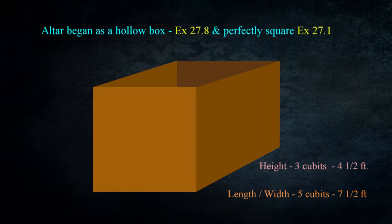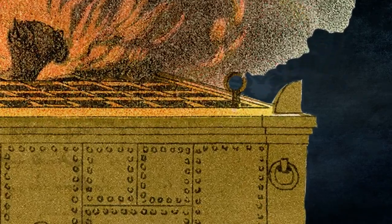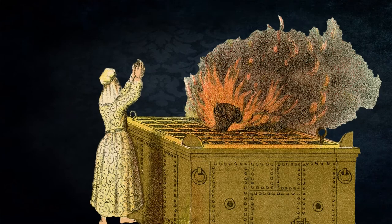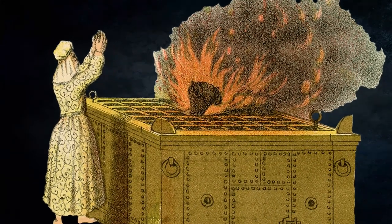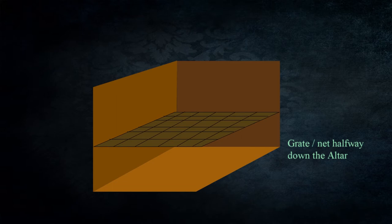The boards were then to be overlaid with bronze — the King James Version renders this as brass, though historically bronze is considered more accurate. At the corners, Moses was to place horns, also overlaid with bronze. Bronze rings were set at the corners to hold staves of acacia wood overlaid with bronze, used for moving the altar. Since the altar would be used for burning the bodies of sacrifices, a grate — referred to as a net in the KJV — was created to separate and remove ashes, placed halfway down the hollow body of the altar.